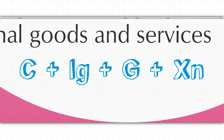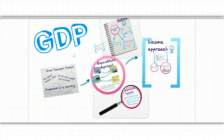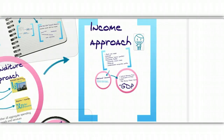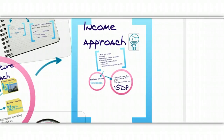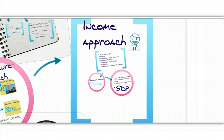The other approach is the income approach. You won't memorize this step by step, but what we need to remember from the circular flow is that all spending becomes someone's income. So we can look at the other side of the coin — instead of looking at everything we spend, if we look at what everyone earns, we can use the income approach to figure out GDP that way.